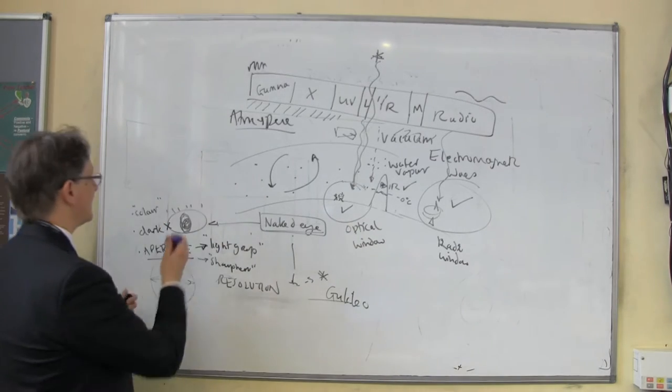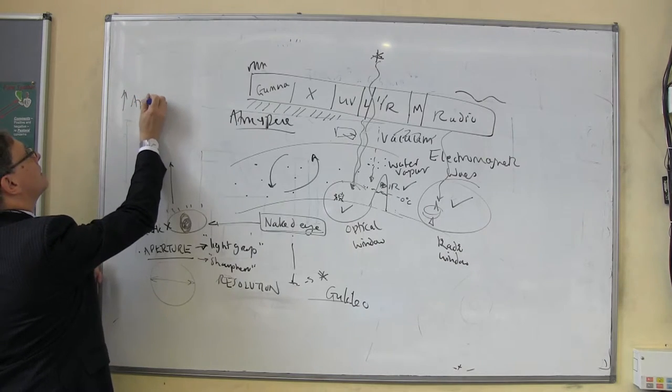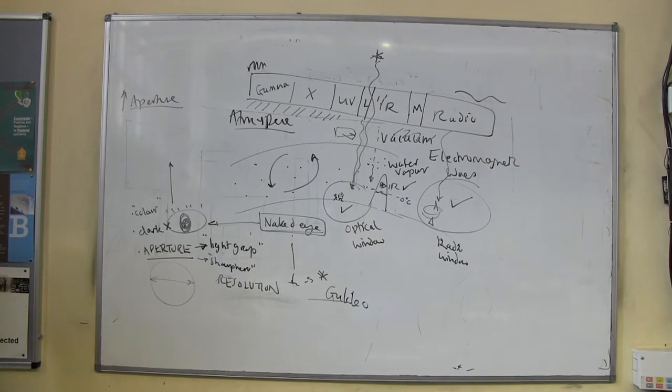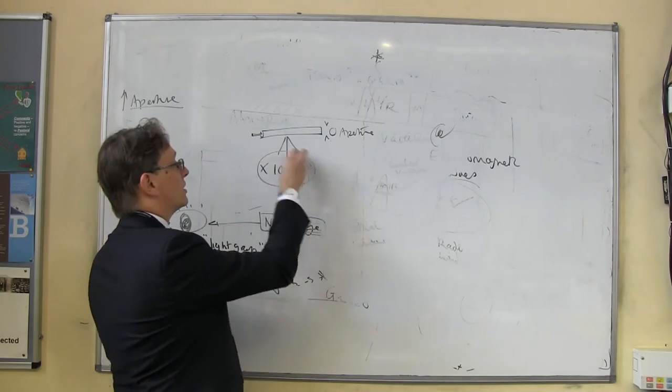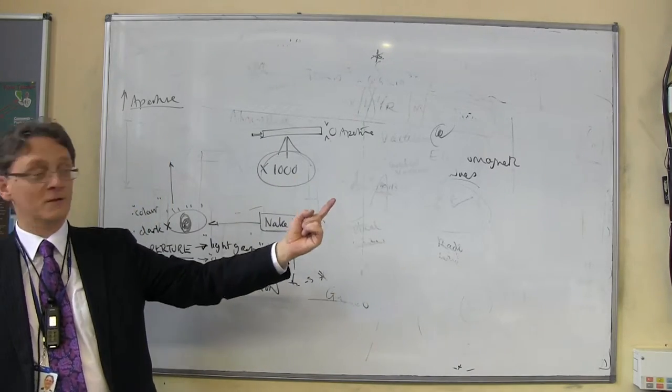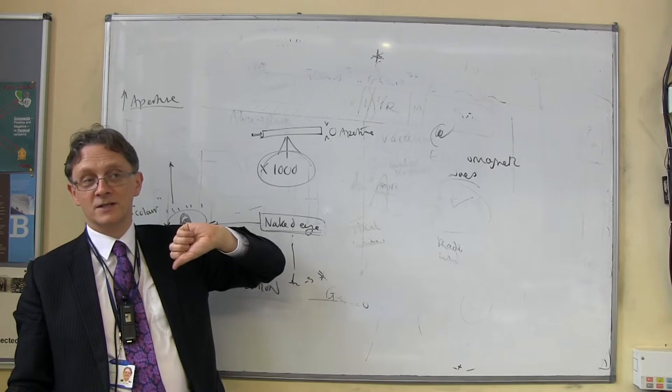The second thing, it affects the sharpness or the resolution. There's a limit on how sharp an image you can see because of the hole in the front. What we need to do is basically to increase the aperture. That's the fundamental issue with telescopes. There's no point trying to magnify something if you haven't got enough light in in the first place.